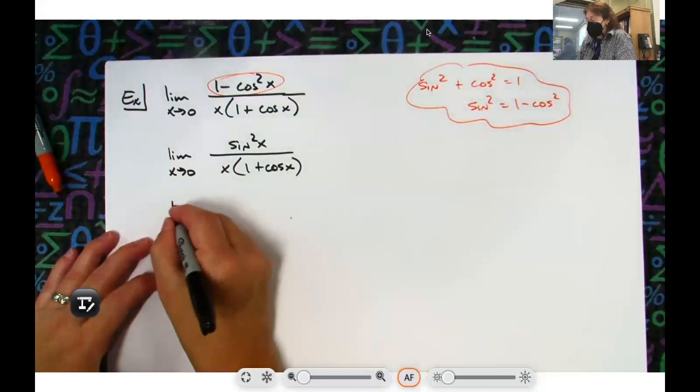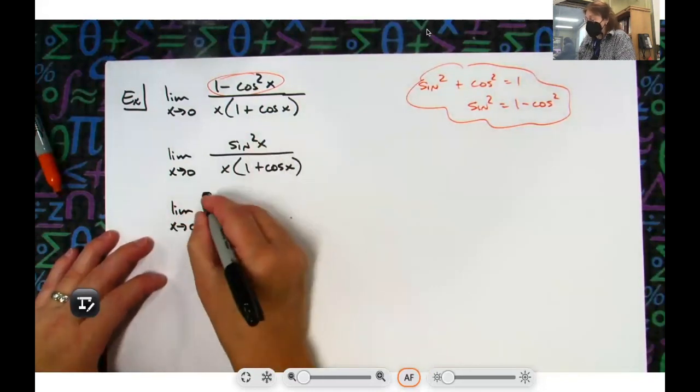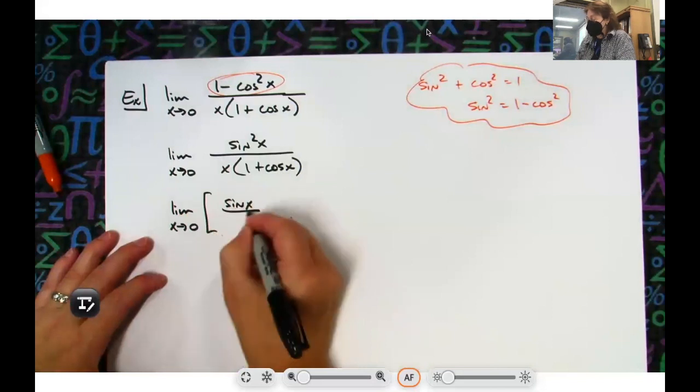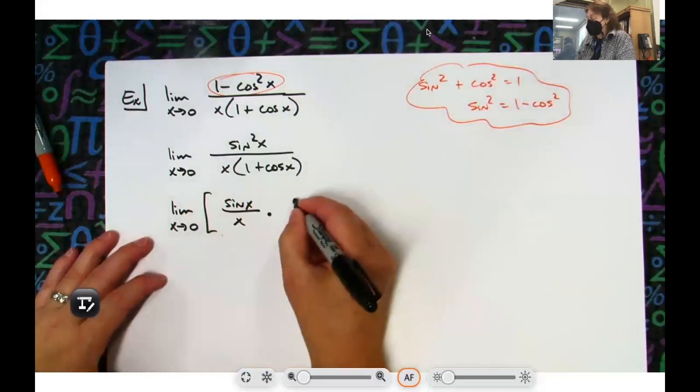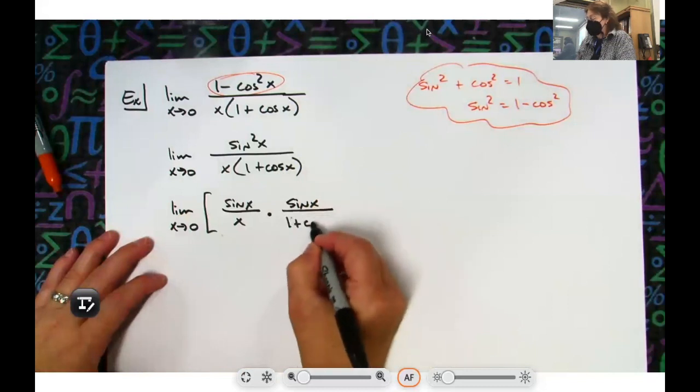So the limit as x approaches 0, take one of them, sine x over x. Take the other one, sine x, because I've got two of them, over 1 plus cosine x.